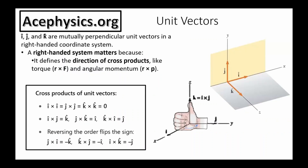Let's start with a quick reminder about the unit vectors. I hat, J hat, and K hat point along the x, y, and z axis in a standard 3D Cartesian coordinate system.